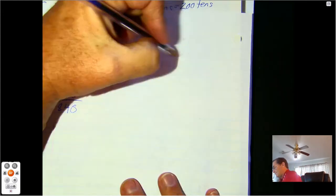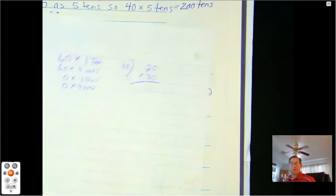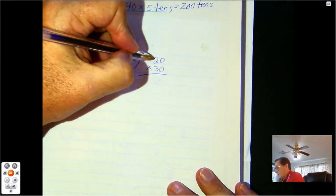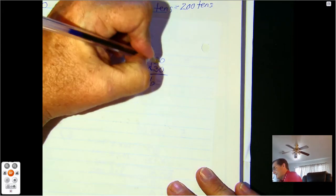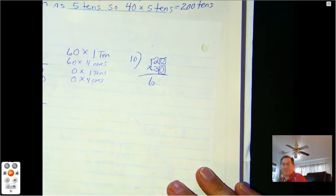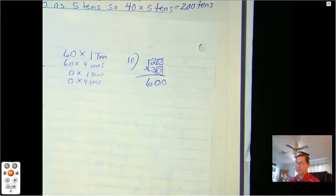Number 10. 20 times 30. I'm going to use the basic math fact. 2 times 3 is 6. And both of those have zeros in the factors. So I have two zeros in my product. So 600.